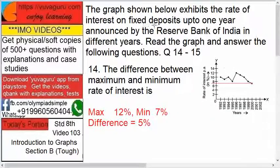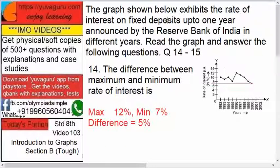Fixed deposits mean you keep your money for one year or two years, and banks give you some amount but you can't withdraw it before the time you've invested. Savings means you can invest any time and take out any time. Current accounts are for business persons.